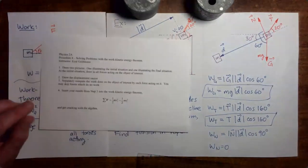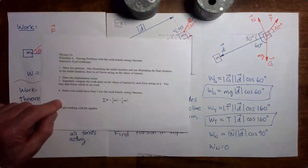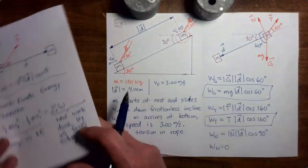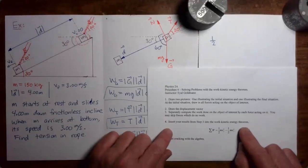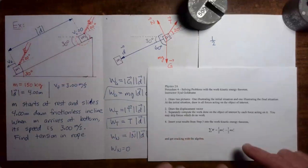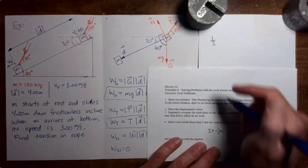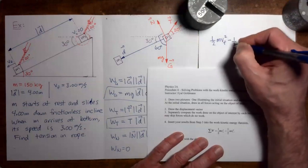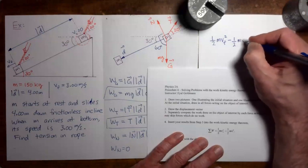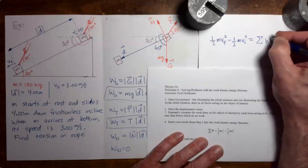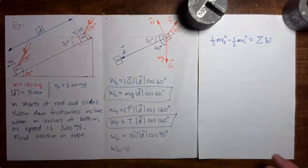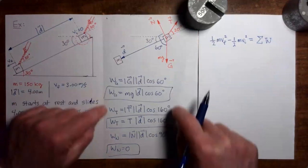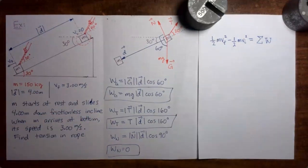Now we go to step four: apply the work-kinetic energy theorem. The change in kinetic energy — one-half mv-final squared minus one-half mv-initial squared — equals the sum of all work done by all forces. To evaluate this sum, I take the expressions for work done by each of the three forces and add them together.